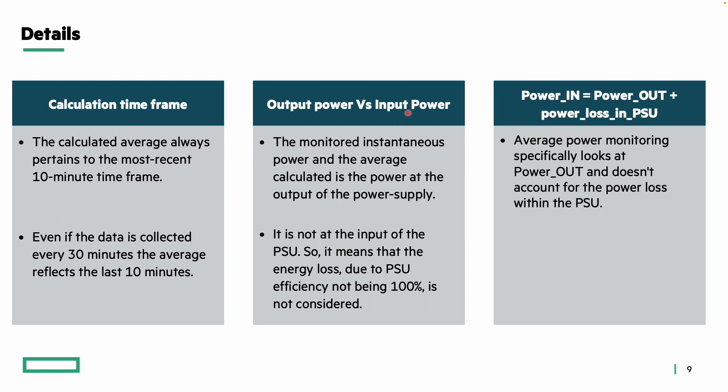Regarding output power versus input power, the monitored instantaneous power and the calculated average power are measured at the output of the power supply — we do not consider power input to the PSU. This distinction is important because it means we are not factoring in energy loss caused by the PSU's efficiency not being 100%. Average power monitoring specifically looks at power output and does not account for power loss within the PSU.